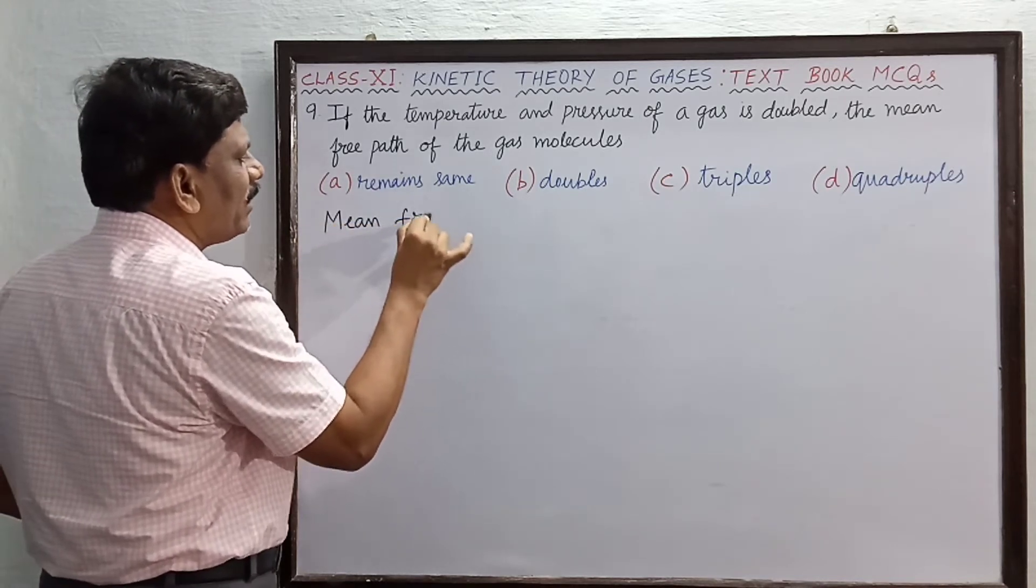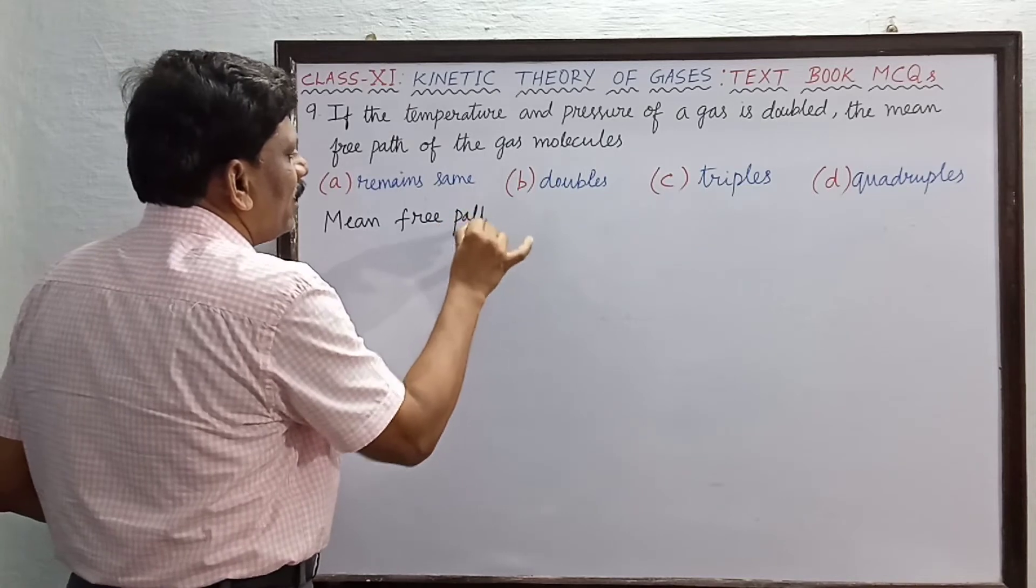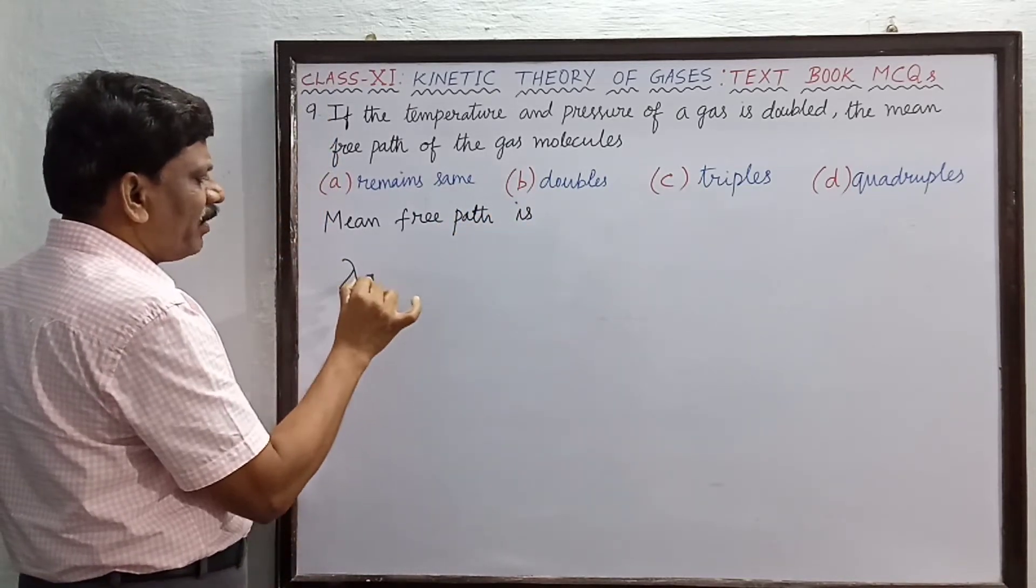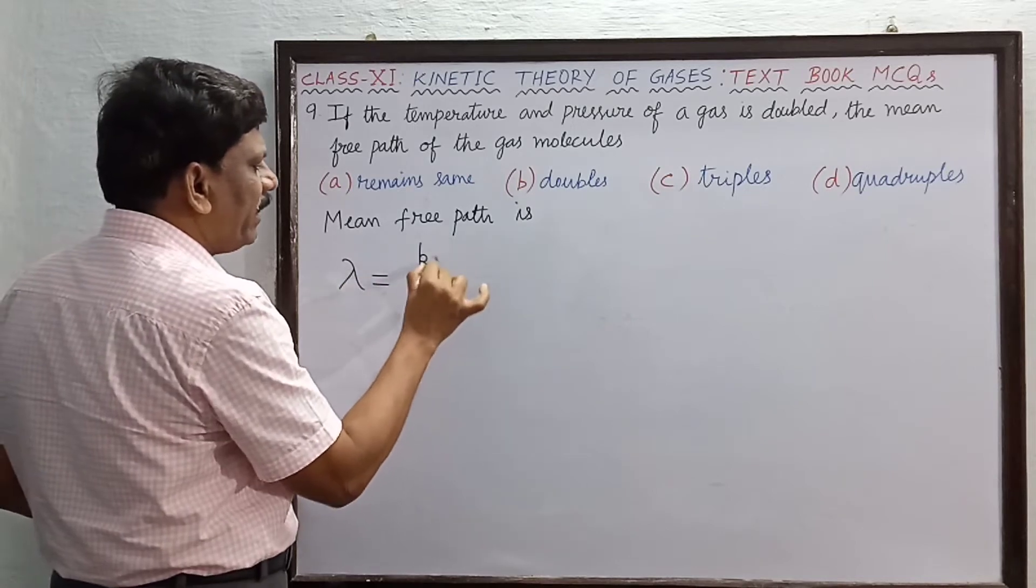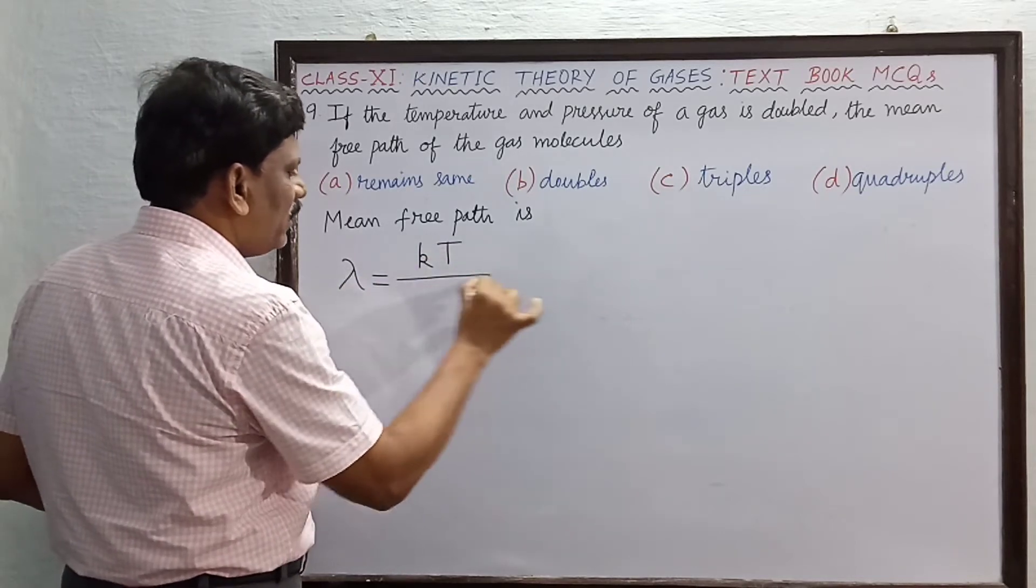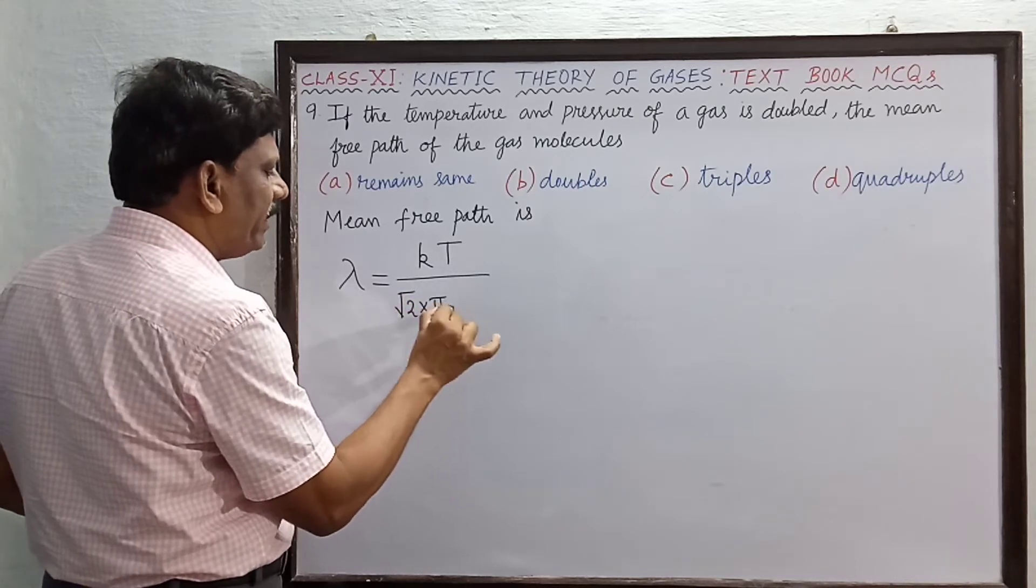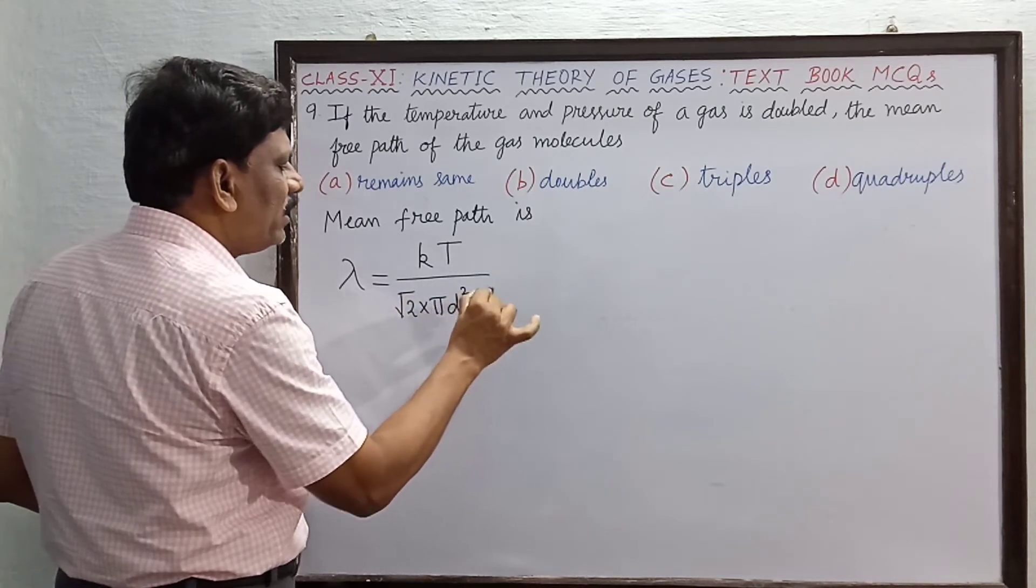Mean free path is given by lambda equals k times T divided by square root of 2 times pi d square times P.